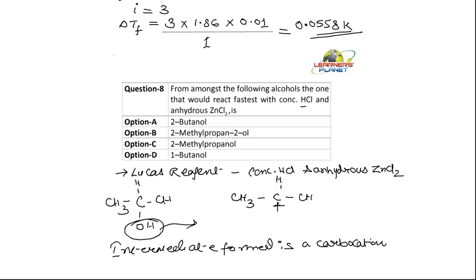So, which carbocation is most stable? The tertiary carbocation is most stable. So, of these, which is the tertiary alcohol?